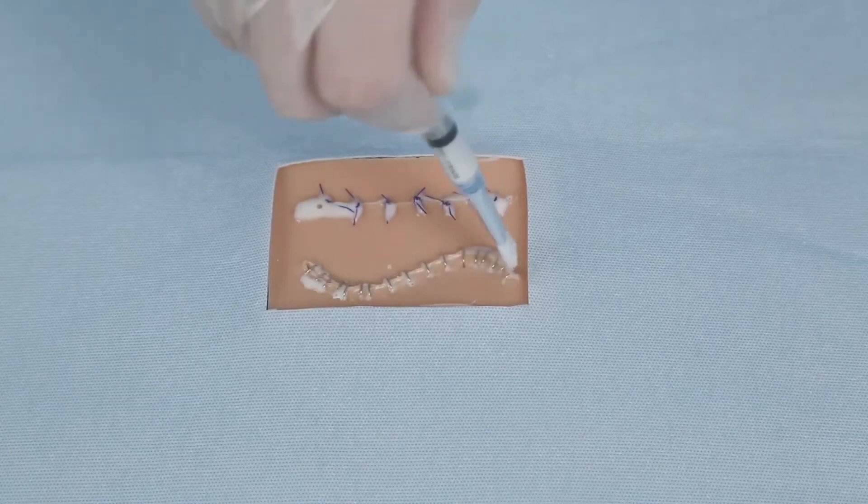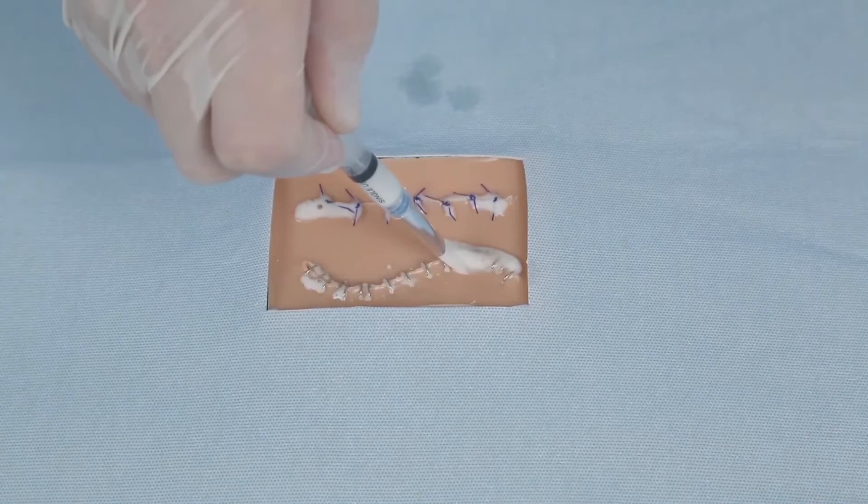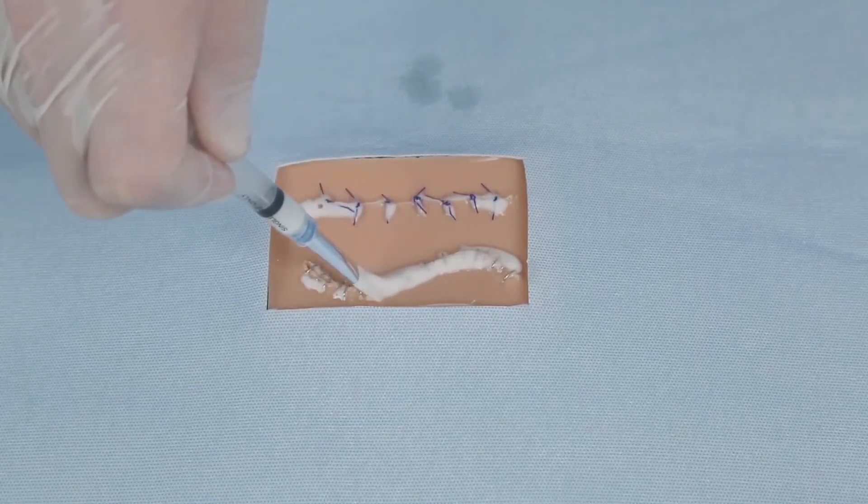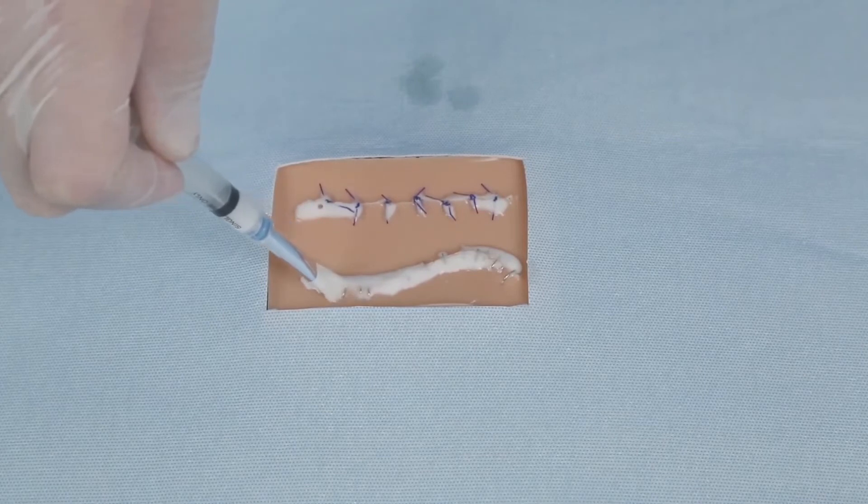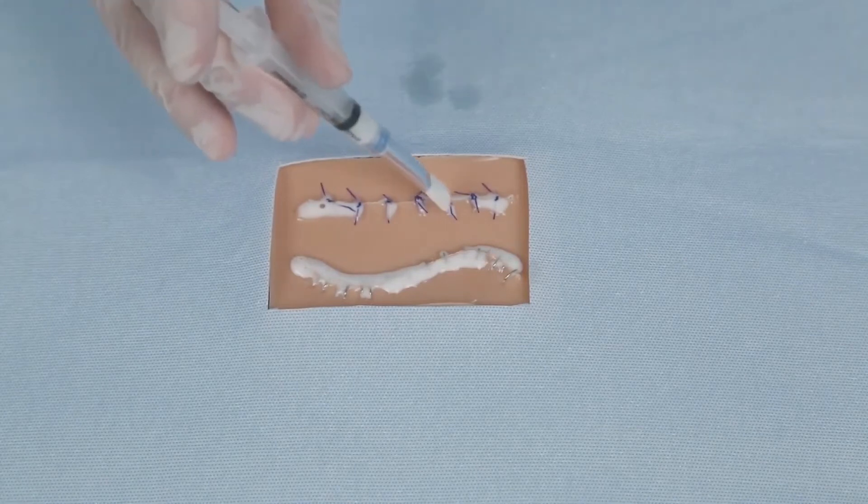Within two minutes the SutureSeal polymer will become an adherent gel. SutureSeal will remain on the suture or wound area for approximately 14 days and will biodegrade away slowly. Apply a second application of SutureSeal if the suture or wound is not completely healed after 14 days.